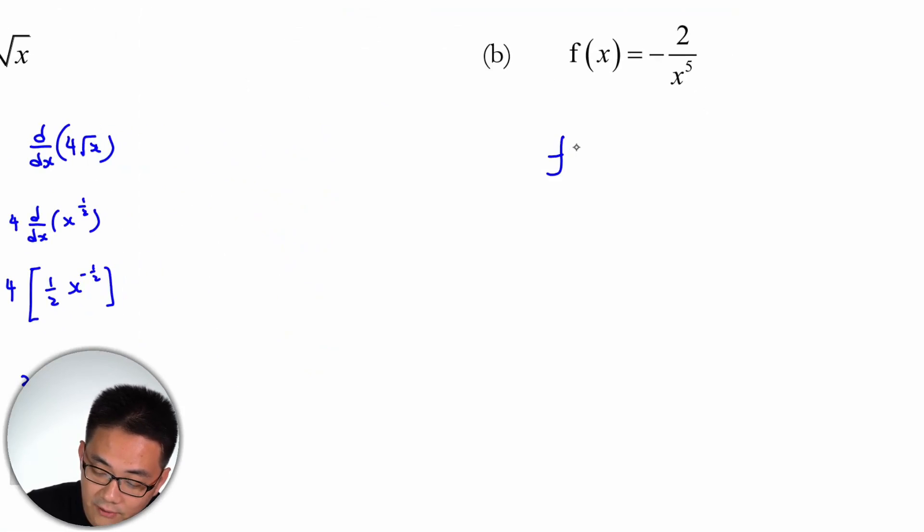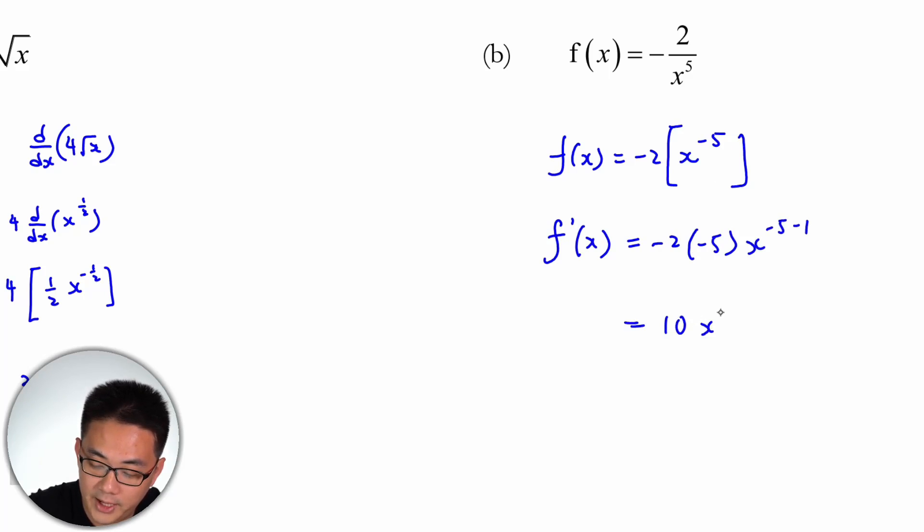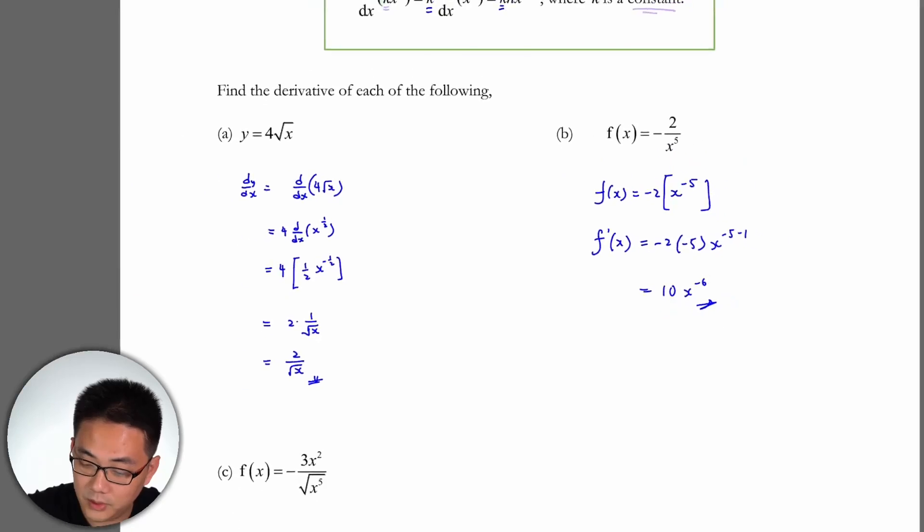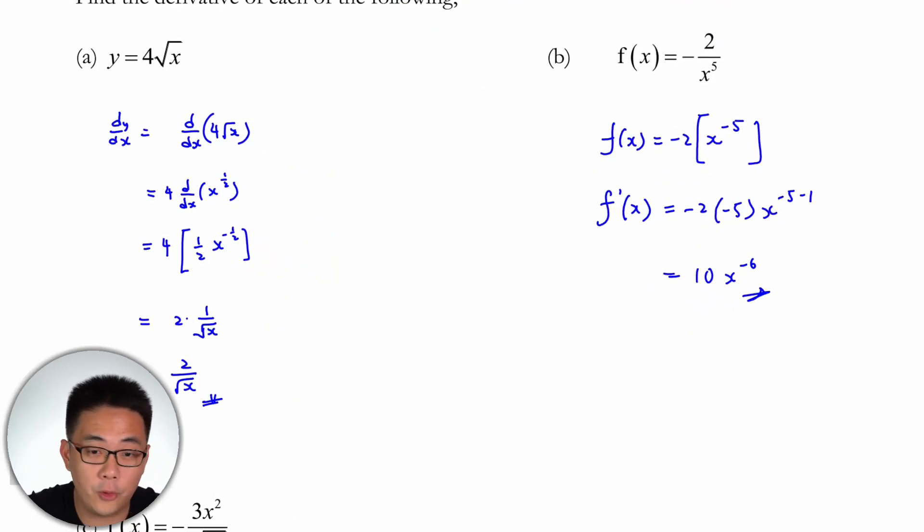Similarly for b, if f(x) equals negative 2 over x to the minus 5, so f(x). Another notation for f(x) when we differentiate, we put a prime. f'(x) would be minus 2. You could just bracket this out. You just need to differentiate this. Minus 5, x to the minus 5 minus 1. So this would be 10x to the minus 6. So that is how you do this part here.